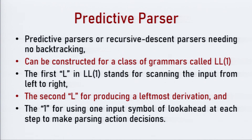Next is the predictive parser. We are now moving to top-down parsing. There are two types of top-down parsers: recursive descent parsers and predictive parsers. A recursive descent parser may require backtracking, while a predictive parser is a recursive descent parser that does not require backtracking because it uses a table — whose entries are built using the FIRST and FOLLOW functions — to select a particular production. The predictive parser can be constructed for the class of grammars called LL(1) grammars.